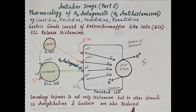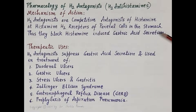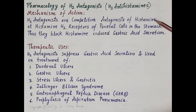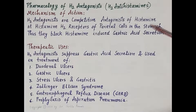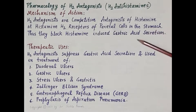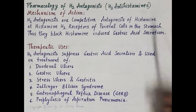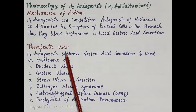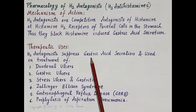In summary, the mechanism of action of H2 antagonists is competitive antagonism of histamine at H2 receptors of parietal cells in the stomach, thereby blocking histamine-induced gastric acid secretion.